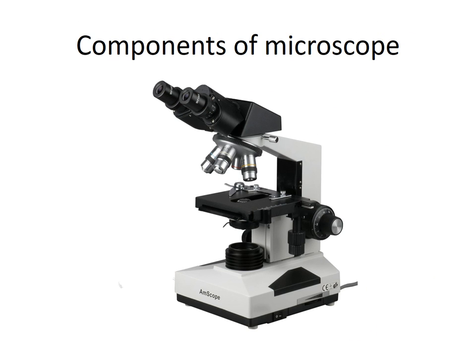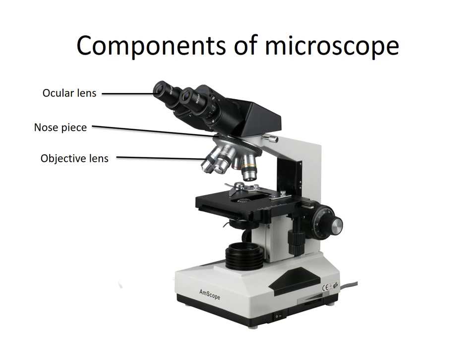Now let's discuss the components of a microscope. The ocular lenses are what we actually look through to see a specimen, and the objective lenses add to the magnification of the ocular lens. To switch between objective lenses we can rotate the nosepiece. The stage is where we place the slide specimen, and we need to illuminate that specimen from underneath using the light source.